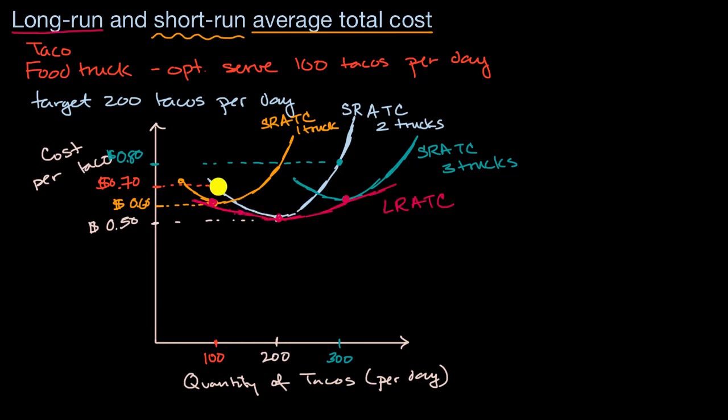Each of those short-run average total cost curves were based on a certain amount of fixed costs in the short run, but in the long run, you can change your fixed costs. Here our fixed costs were the number of trucks, and so we can vary it to optimize for a certain amount of quantity.